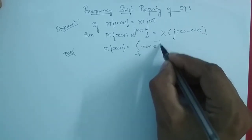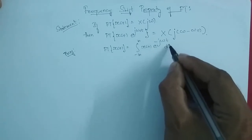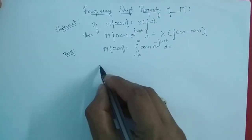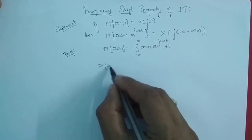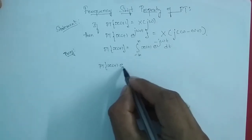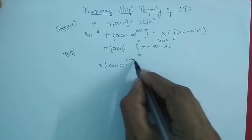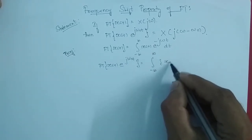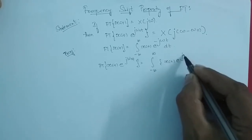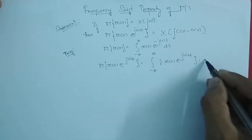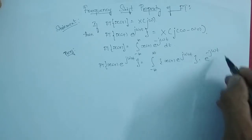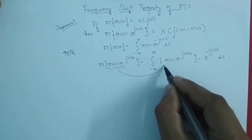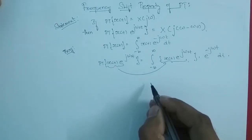x(t) · e^(−jωt) dt. Now the Fourier transform of x(t) · e^(jω₀t) can be written as integrating from minus infinity to infinity of x(t) · e^(jω₀t) · e^(−jωt) dt.